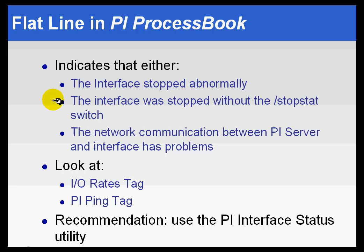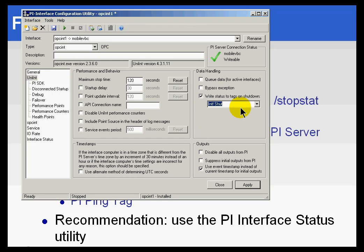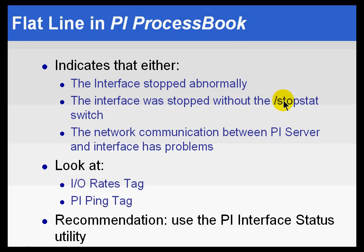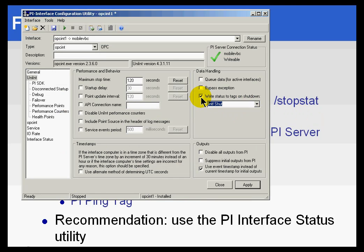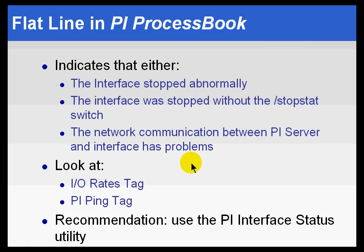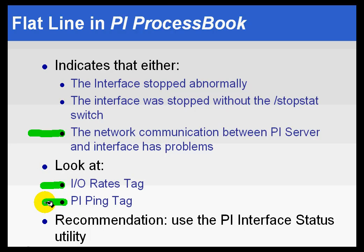If you come in one day and find a flat line in ProcessBook, it could be an indication that the interface has stopped abnormally — meaning it stopped in a way in which it did not have time to write the status of interface shutdown. Perhaps it crashed without being able to write that during a regular shutdown. Or it could simply be that you forgot to configure the Slash StopStat switch. You can also see this kind of problem if there's a network communication problem between the server and the interface, which will immediately show up in the IR rates falling to zero. You can also help detect that using ping.